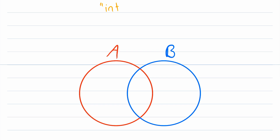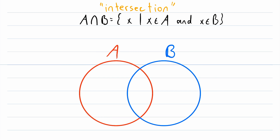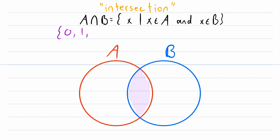Let's talk about set intersection next. We'll jot down a quick definition in set builder notation. The intersection of two sets A and B is the set containing all elements that are in both A and B. So if we wanted to shade the intersection of these two sets, it's just where the sets intersect — that almond-shaped region in the middle. That is A intersect B, and here is an actual example of set intersection.